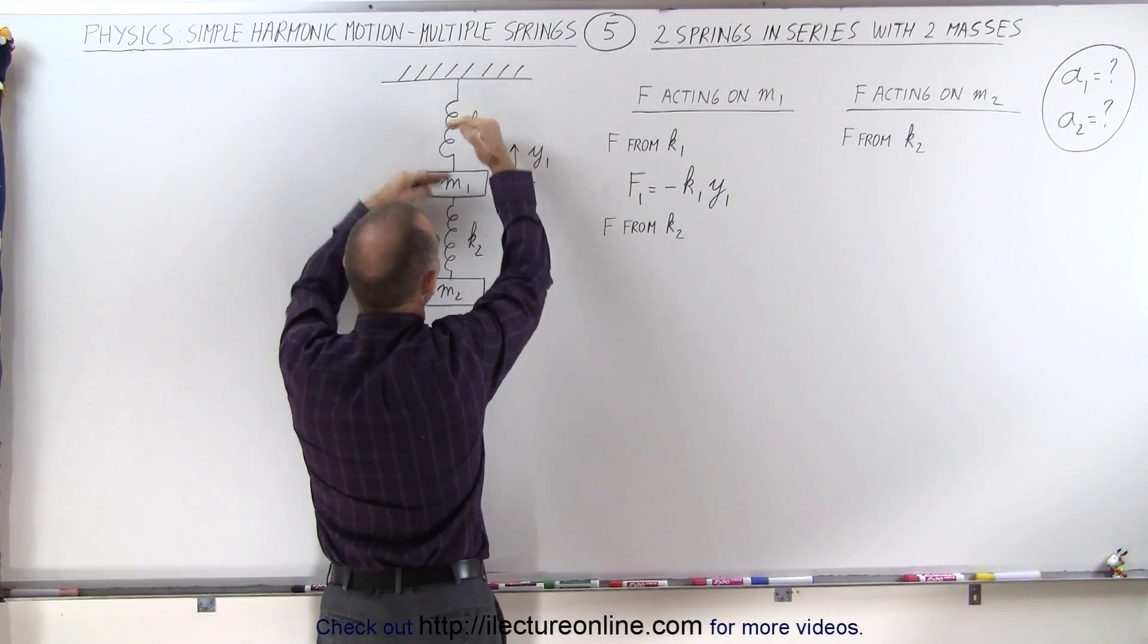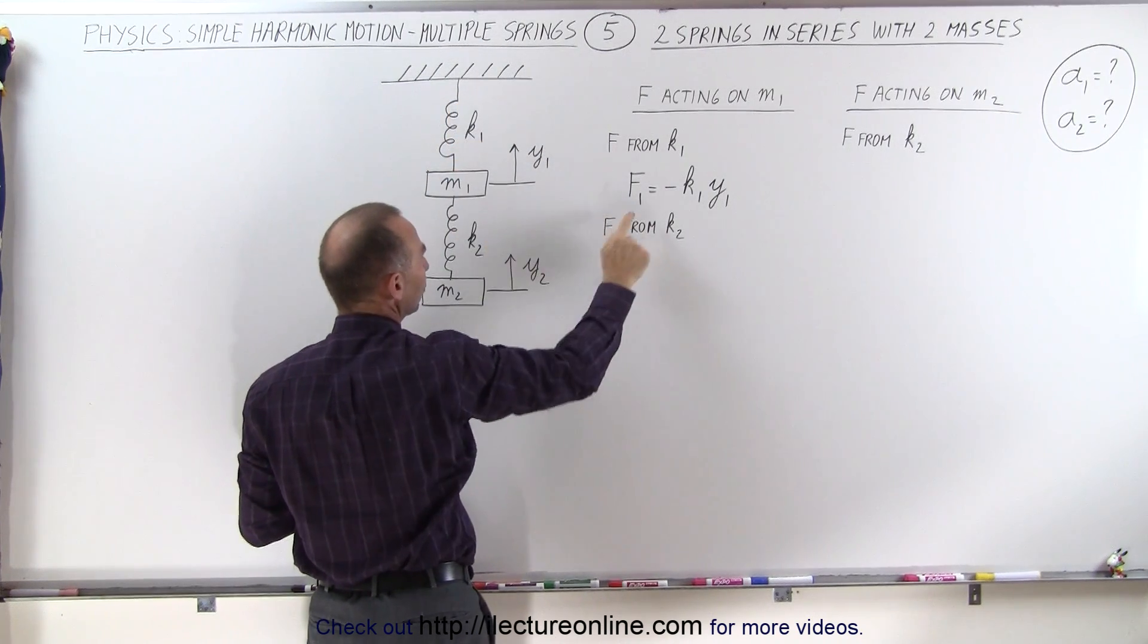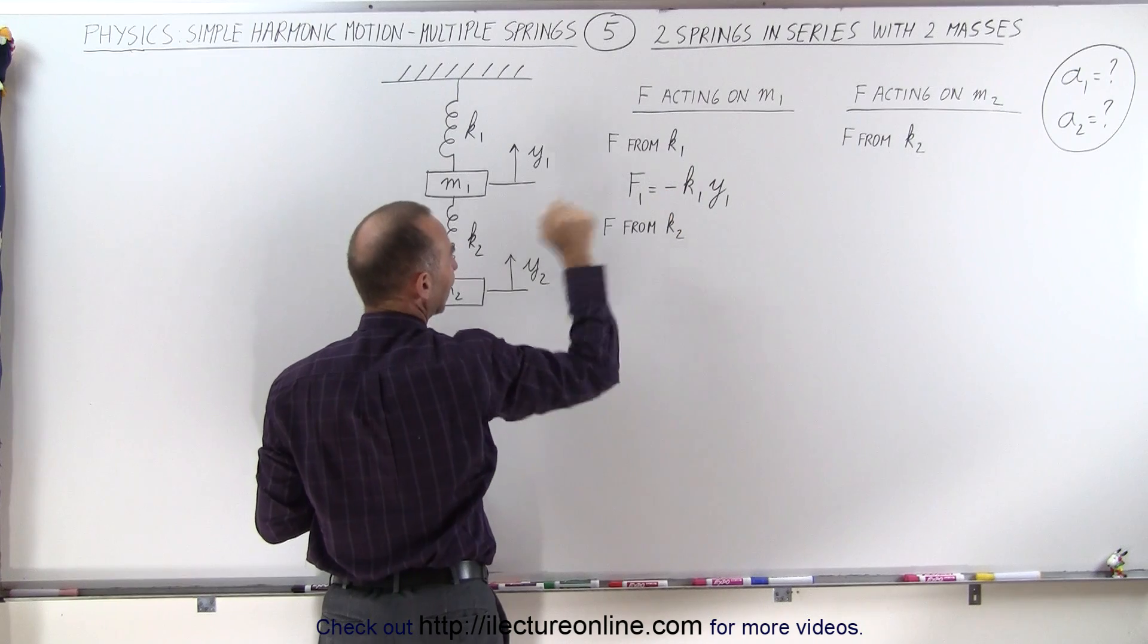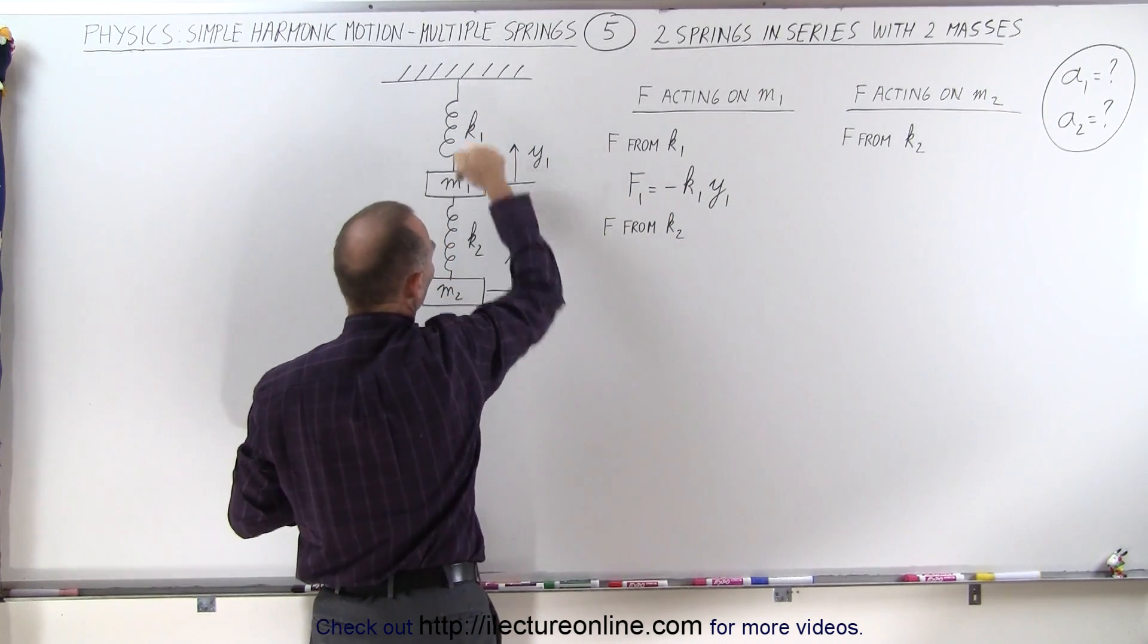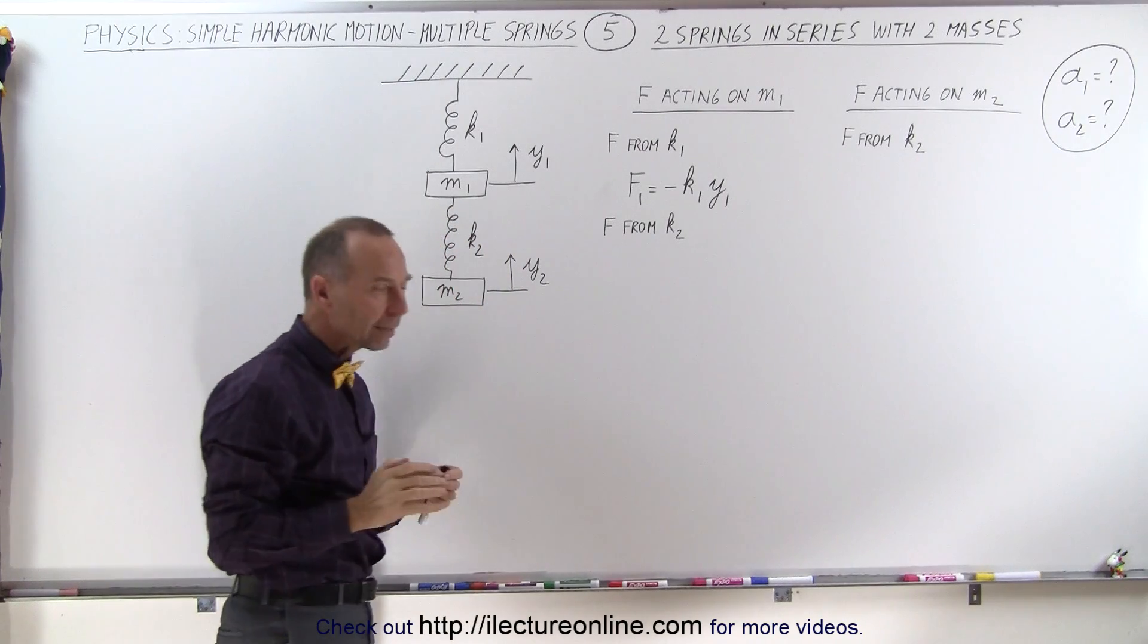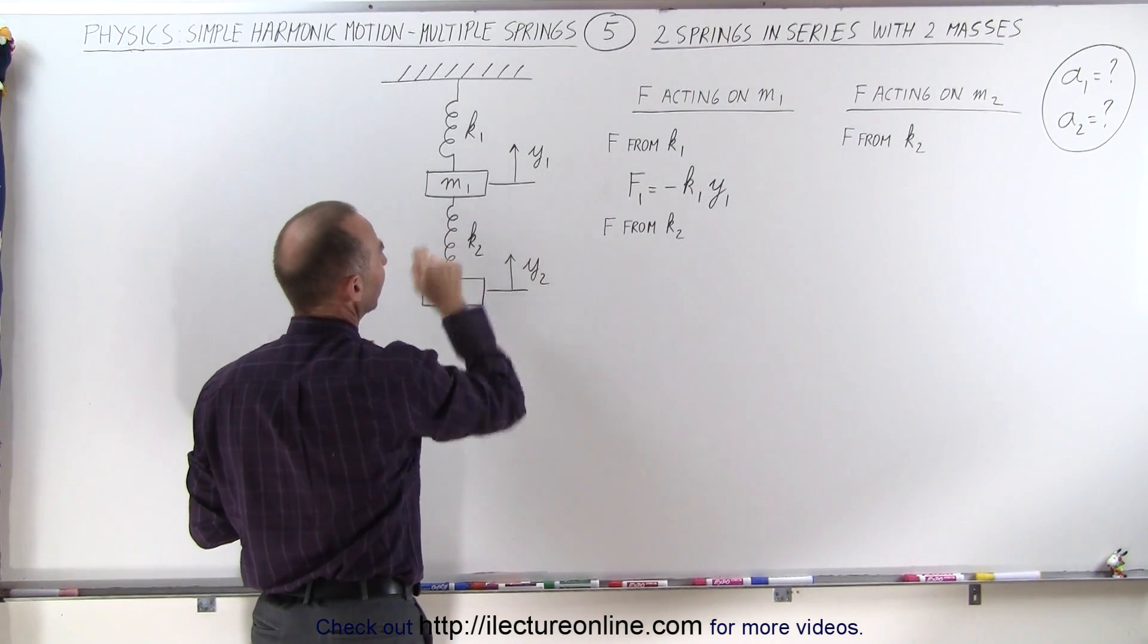If y is positive, you're compressing the spring, which means that the force of the spring will be pushing downward. You'll have a negative force. That's why the negative is here. That makes sense. When y1 is positive, f1 will be negative.